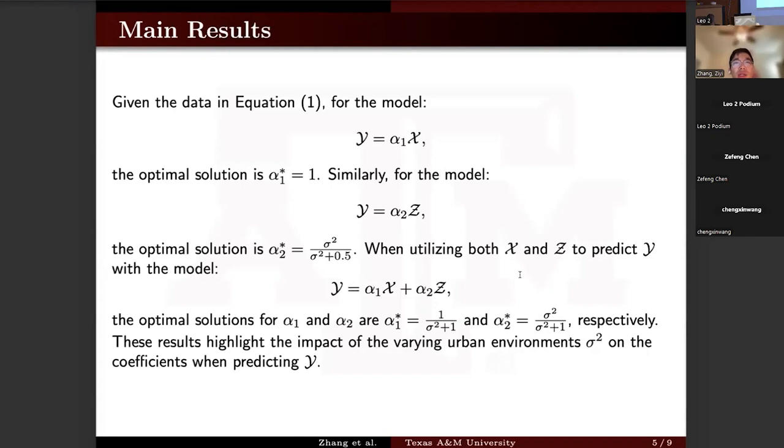the optimal solution of alpha_1 and alpha_2 is also related to sigma. So this result highlights the impact of varying urban environments sigma squared on the coefficients when predicting Y. We have detailed this part in our original paper. If you are interested in it, you can see the details.